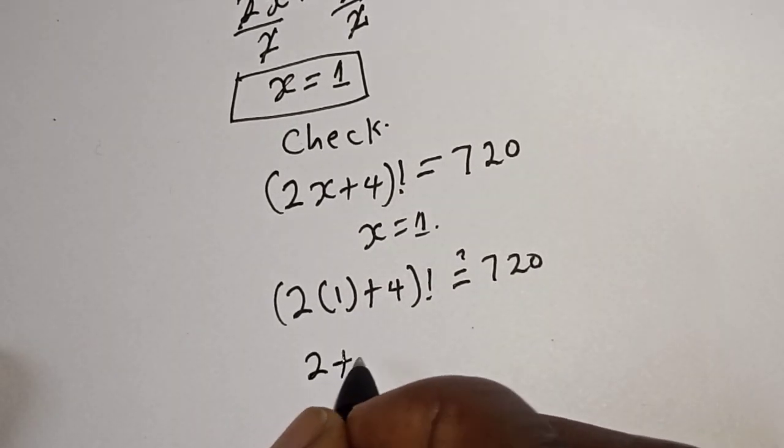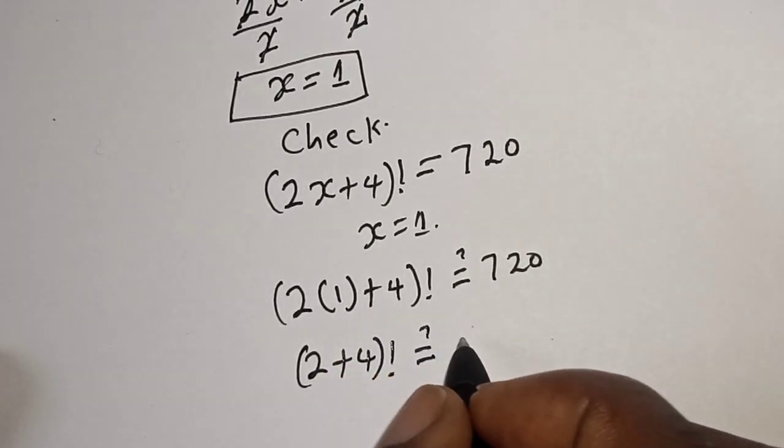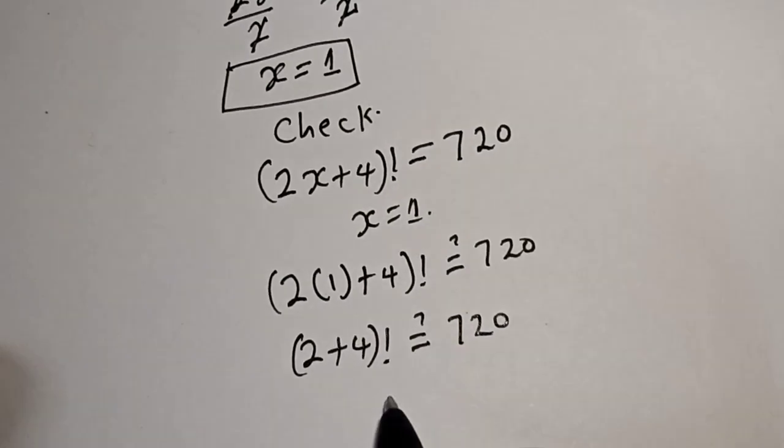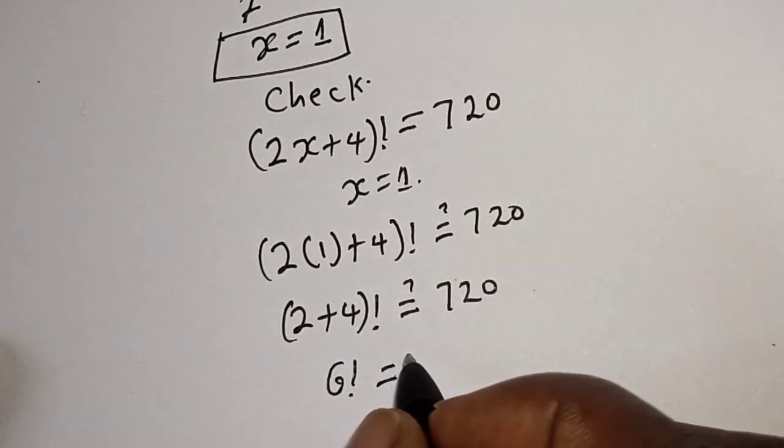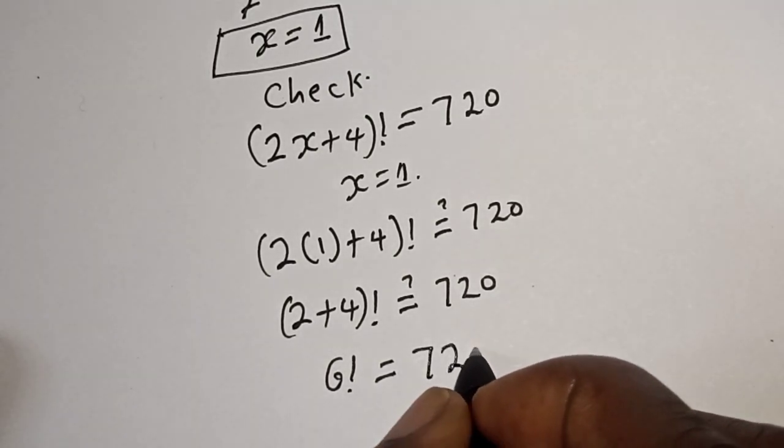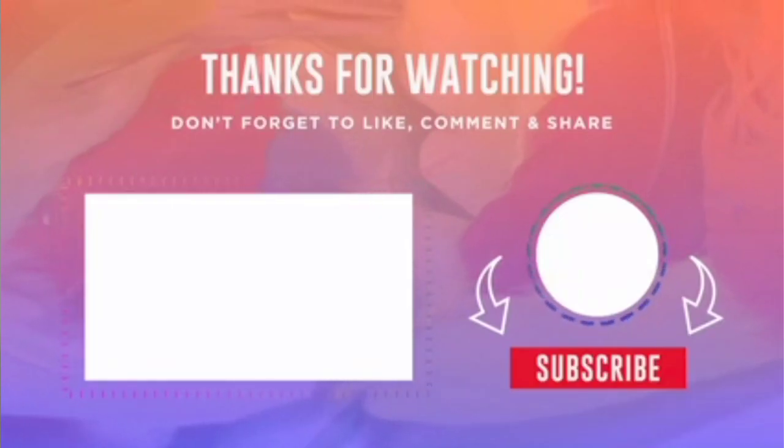Now let's see: this is 2 times 1, which is 2, plus 4 factorial must be equal to 720. Then 2 plus 4 is 6 factorial is equal to 720, which satisfies the given equation at x is equal to 1. If you enjoy the class, please don't forget to like, share, comment and subscribe. Thank you.